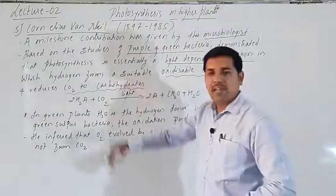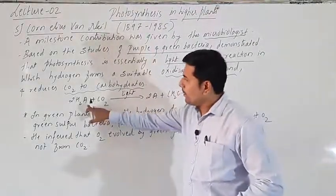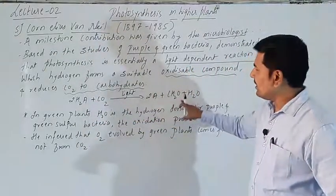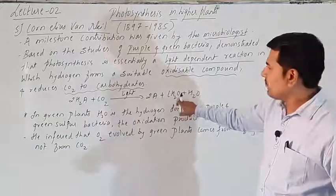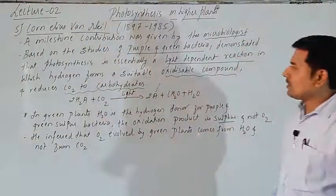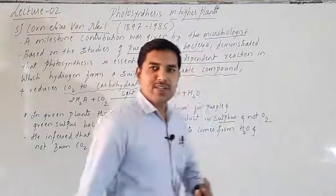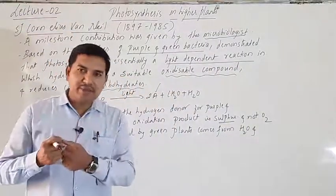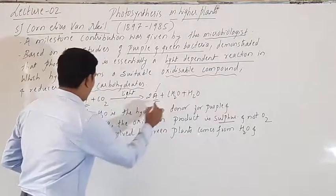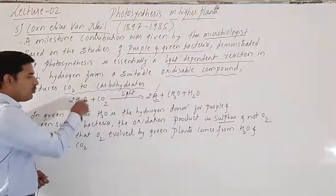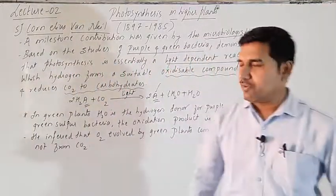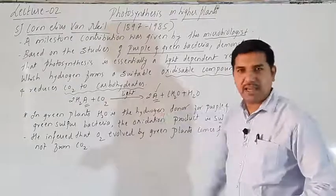The equation follows: 2H₂A + CO₂ in the presence of light forms 2A + CH₂O (carbohydrate) + H₂O. Here A refers to oxygen. So 2H₂A means if it is H₂O, then 2 molecules of oxygen are released. O₂ is released during the process of photosynthesis. That was the equation stated by Neel.